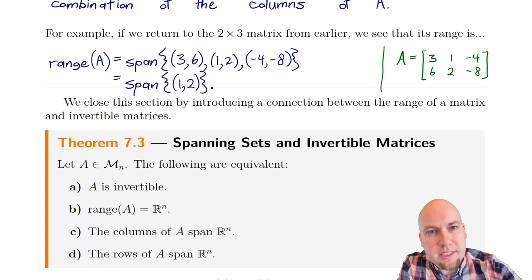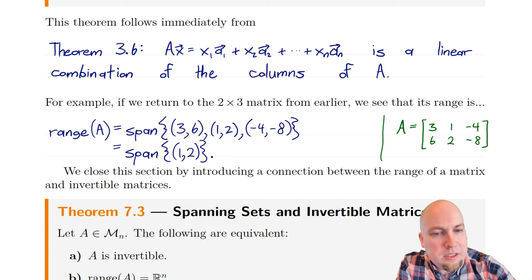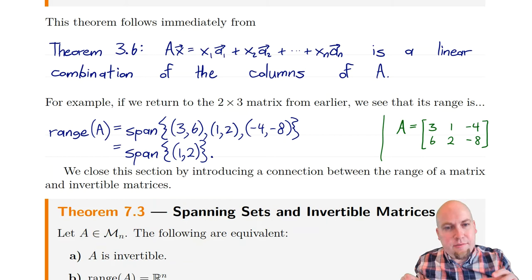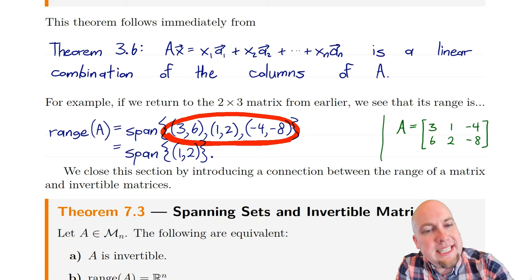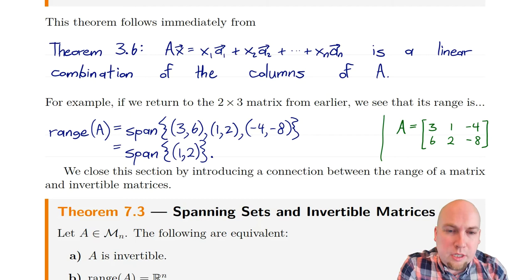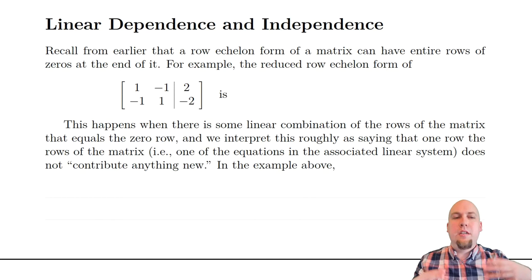We learned that the range of this matrix A is equal to the span of these three vectors here, but it's also equal to the span of just one vector, because these two extra vectors didn't contribute anything new. Linear dependence captures that idea of some vectors in a span being redundant — we don't actually need the vector (3,6) or the vector (-4,-8). We would say that this set of vectors is linearly dependent, so we can throw away something from it without actually altering the span. When we do, we get the set containing just the vector (1,2), which is linearly independent. There's nothing left that we can throw away without altering the span. It captures the idea of some vectors being redundant and not contributing anything new to linear combinations.